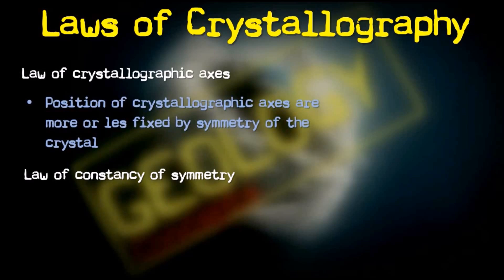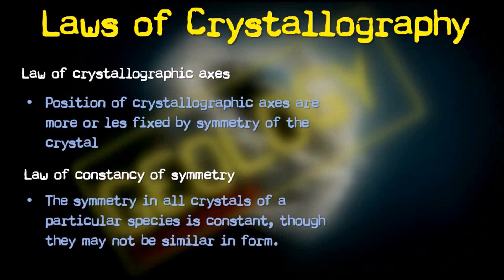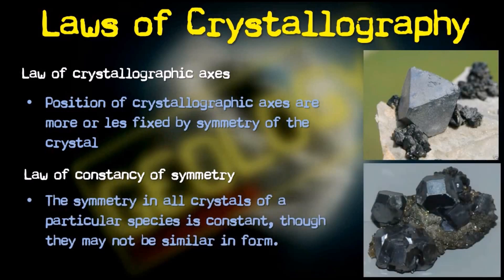The final law is the Law of Constancy of Symmetry. This law, propounded from X-ray studies of crystals, states that the symmetry in all crystals of a particular species is constant. Though they may not be similar in form, the elements of symmetry will be constant for a particular species. For example, the galena crystal can occur as an octahedron, a dodecahedron, or in cubic shape, but all of these shapes will have nine planes of symmetry, 13 axes of symmetry, and a center of symmetry.